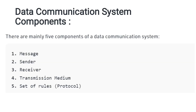Let us consider the components of data communication. We need to exchange information between a sender and a receiver. The components are mainly five: message, sender, receiver, transmission medium, and set of rules.